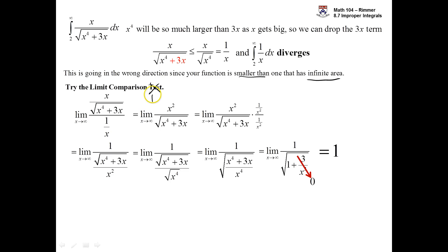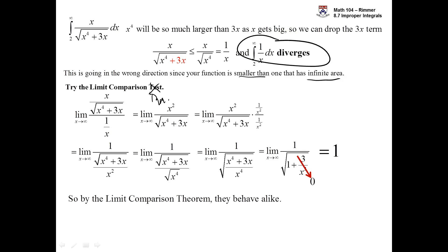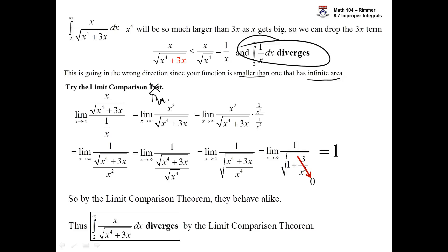So the entire limit equals 1. According to the limit comparison theorem, the two functions behave alike. Since 1 over x diverges, our original function must also diverge. By the limit being 1, as x gets big these functions are essentially the same — f and g are essentially the same function as x gets big. So why would one diverge and the other not? That's the big picture of the limit comparison test — no inequality direction to worry about.